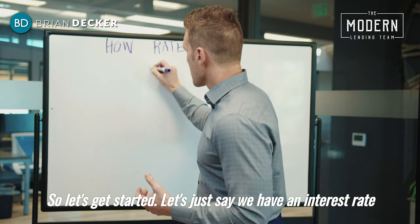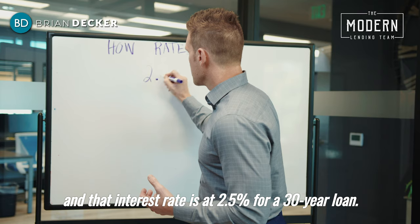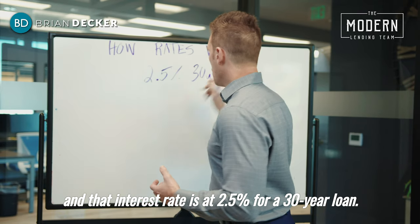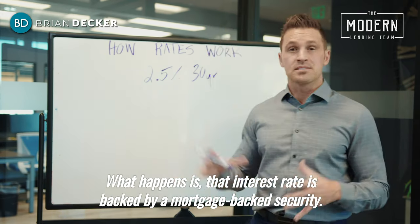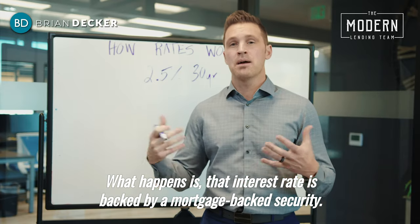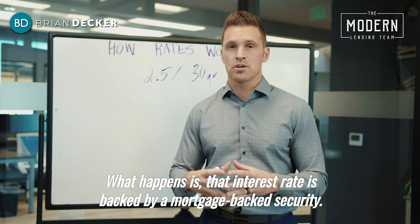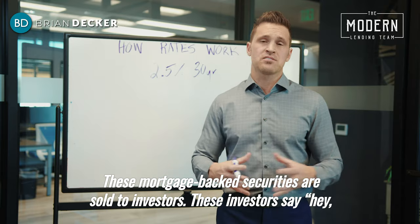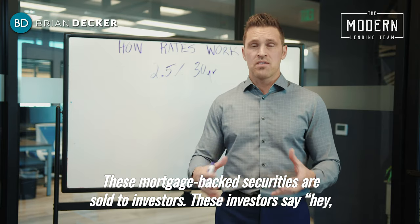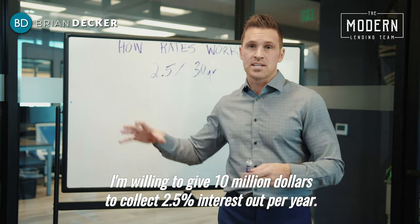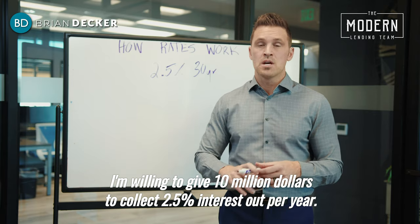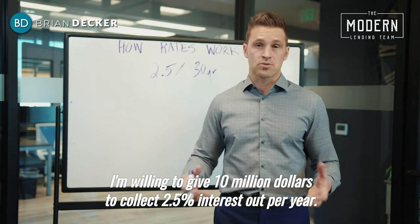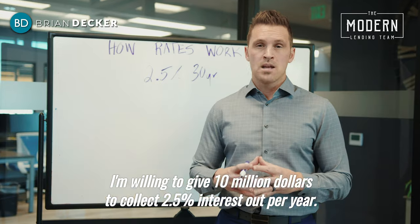Let's say we have an interest rate at 2.5% for a 30-year loan. What happens is that interest rate is backed by a mortgage-backed security, and these mortgage-backed securities are sold to investors. These investors say, 'I'm willing to give $10 million to collect 2.5% interest per year.'